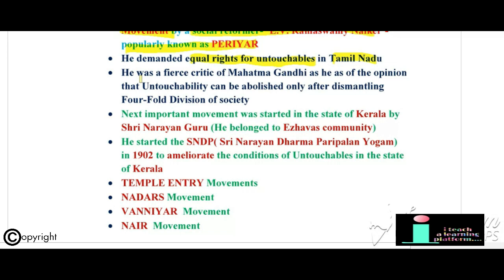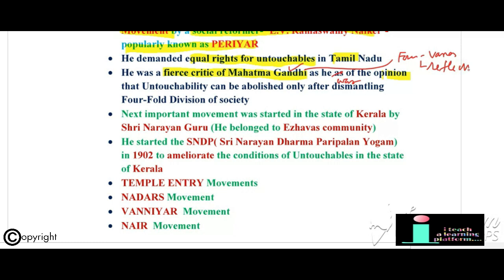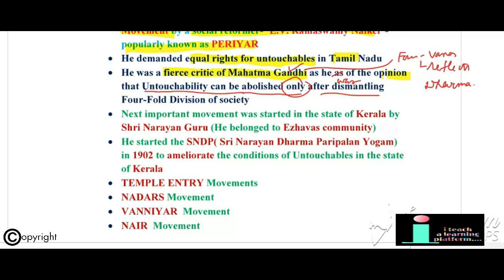An important movement in Tamil Nadu was the Self-Respect Movement by social reformer E. Ramaswamy Naikar, popularly known as Periyar. He demanded equal rights for untouchables in Tamil Nadu and was a fierce critic of Mahatma Gandhi. Gandhi aimed at eradicating untouchability but supported the ancient four-varna classification of Hindu society, viewing varna as reflecting dharma and division of labor. Periyar, however, believed untouchability could only be abolished after dismantling the entire fourfold varna division of society.